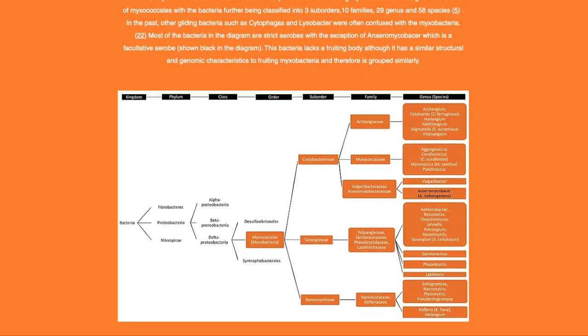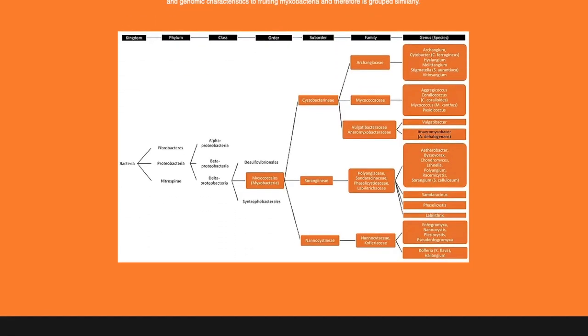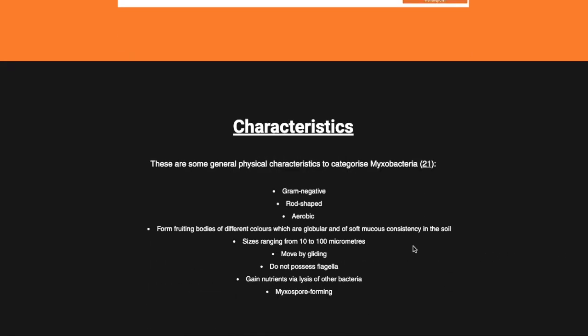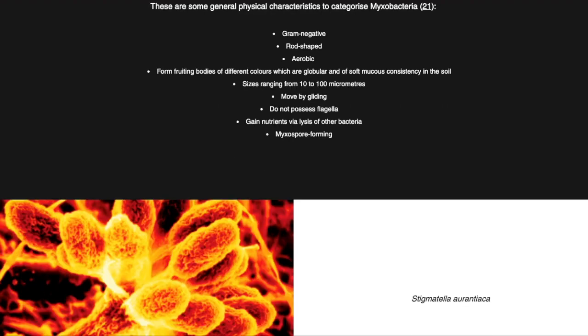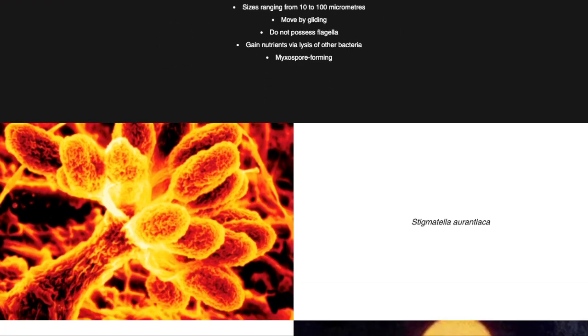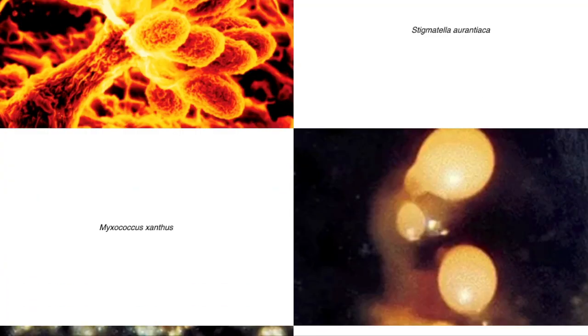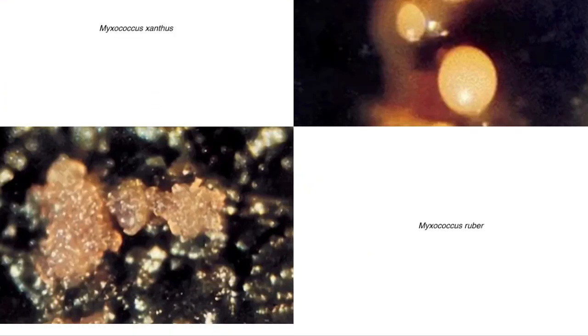Some key characteristics to categorise myxobacteria include being rod-shaped, gram-negative, forming globular fruiting bodies in different colours, gliding, and a size range of 10 to 100 micrometres. Some key bacteria include Stigmatella aurantiaca, Myxococcus xanthus, and Myxococcus ruba.